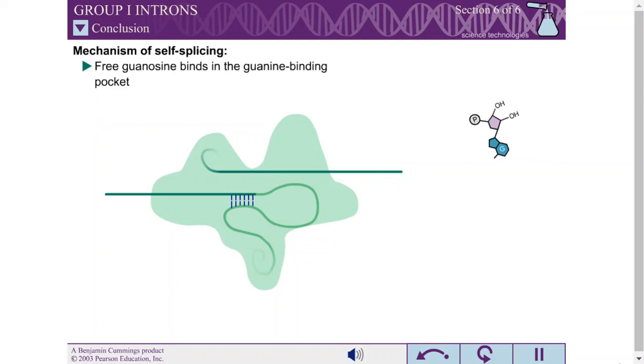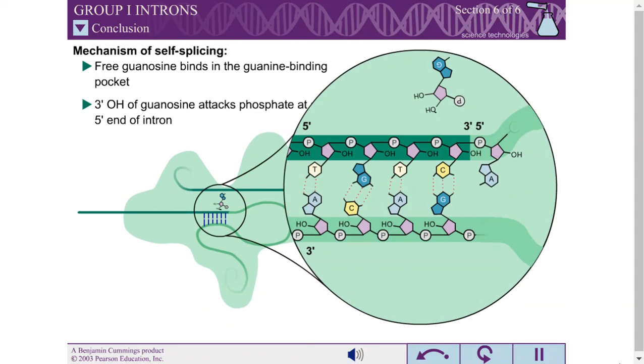A free guanine-containing ribonucleotide binds in the guanine binding pocket, and the 3' hydroxyl of this guanosine attacks the phosphate at the 5' end of the intron.